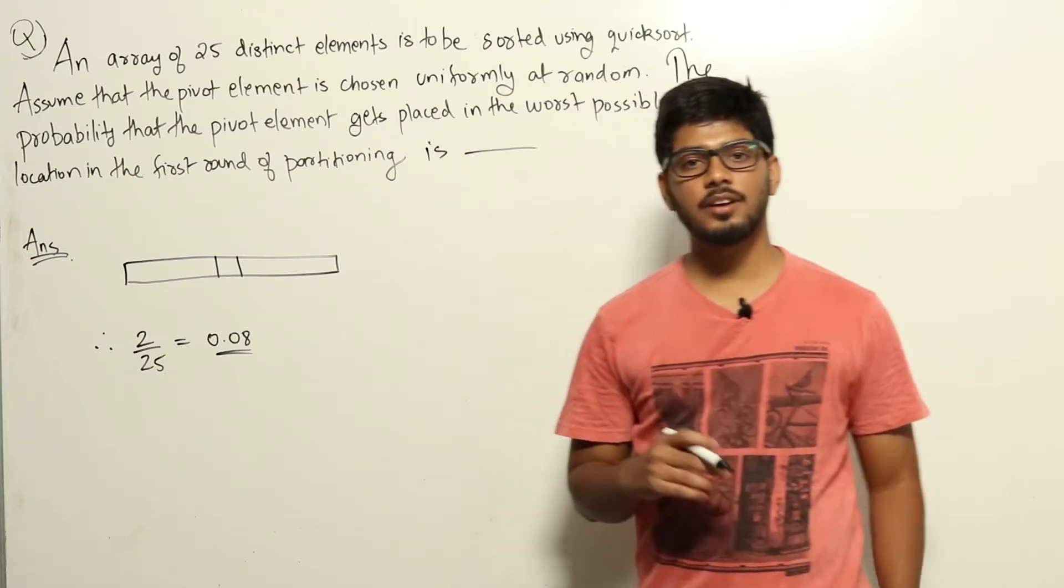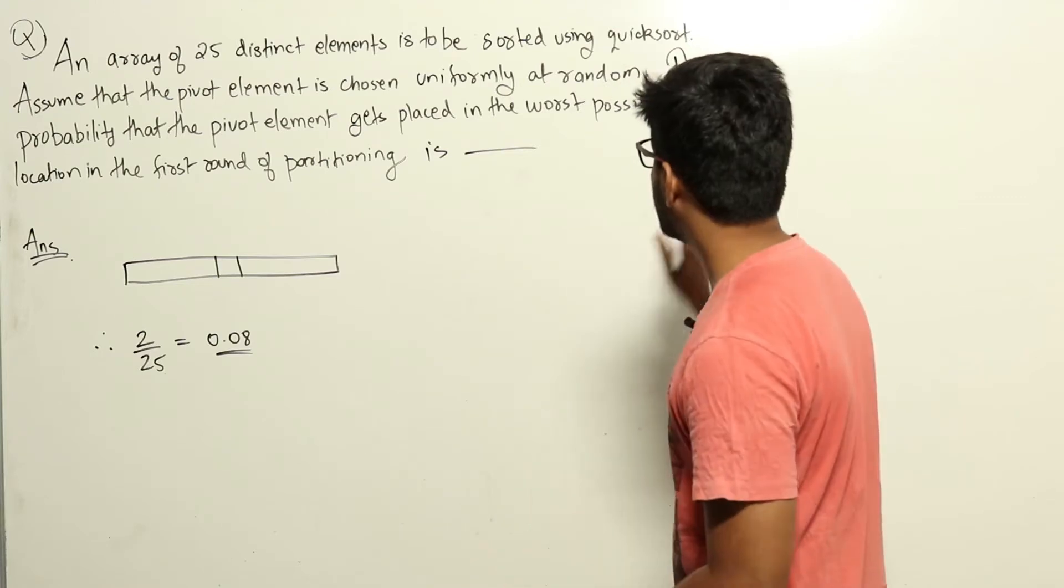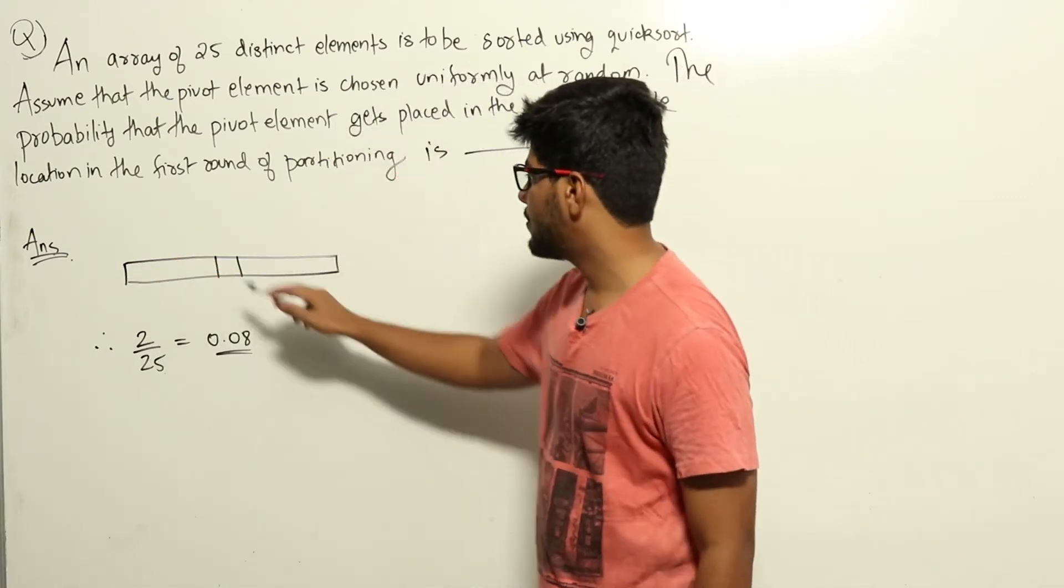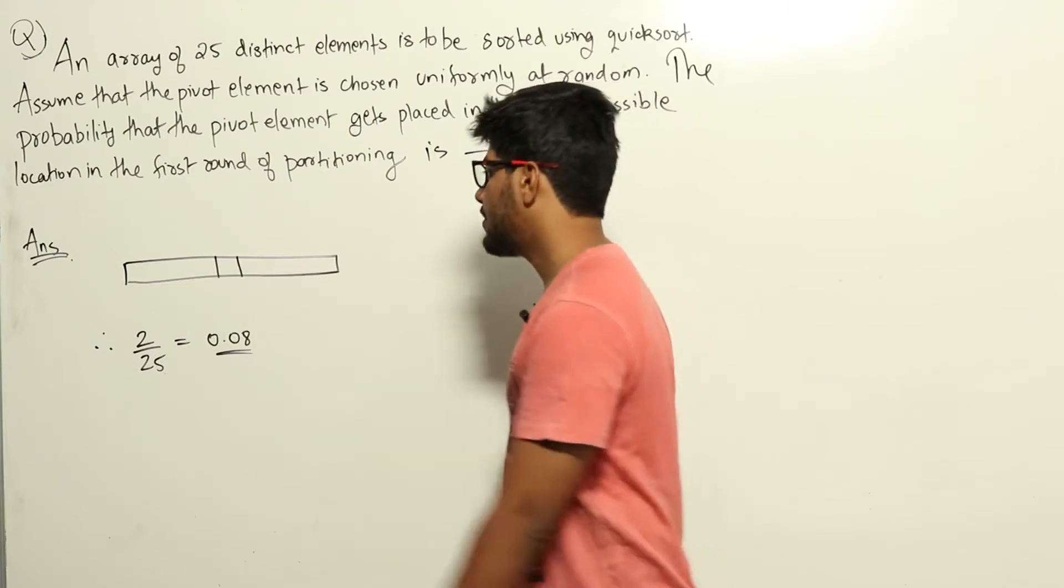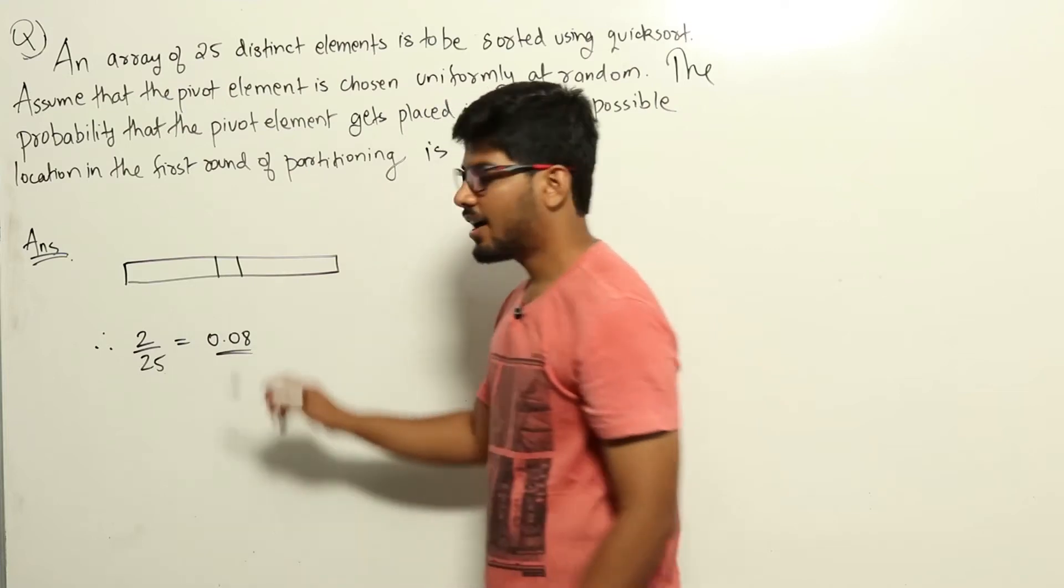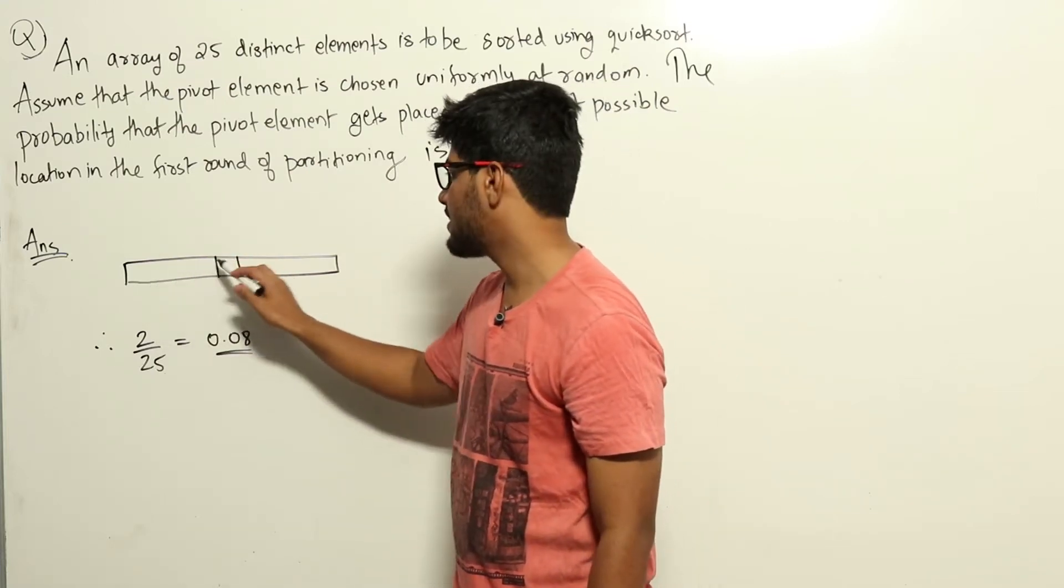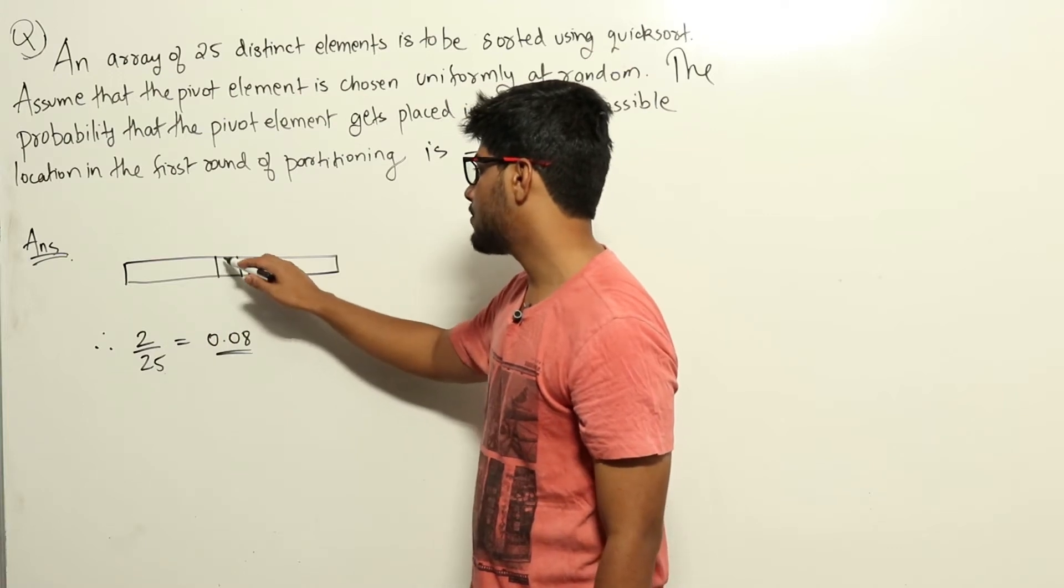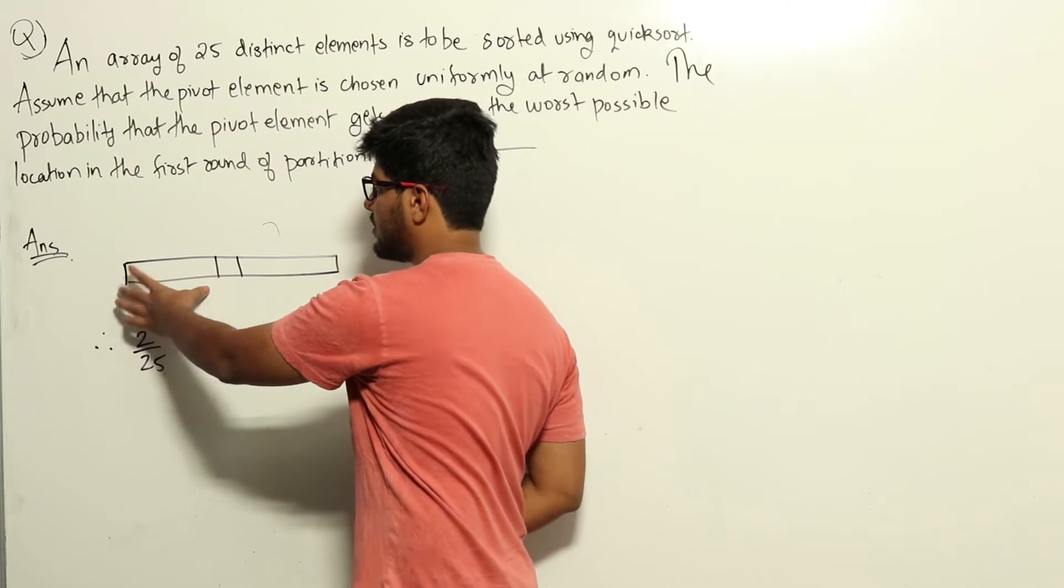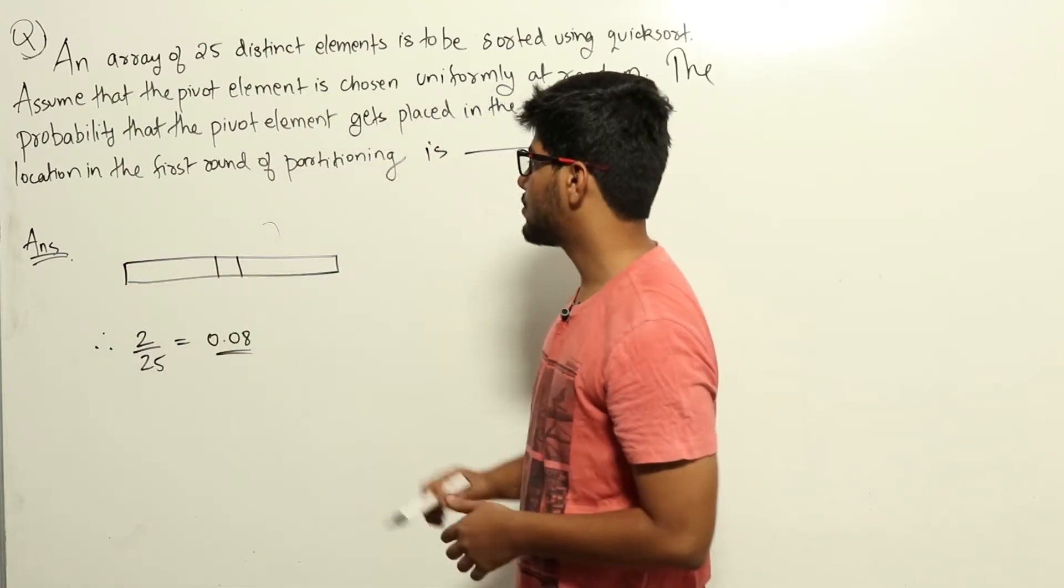It's a simple question from the algorithm section regarding quicksort. In quicksort, if we have an array, we choose one element as the pivot element and place that element in the right sorted position in the array. All elements lesser than that will be placed on the left-hand side, and all elements greater will be placed on the right-hand side. Then we call quicksort on both parts to sort them as well. That is how quicksort proceeds.